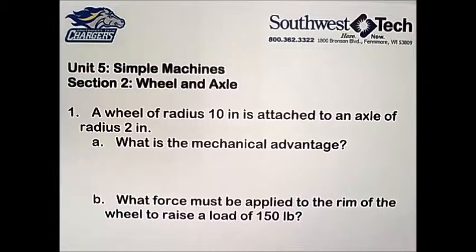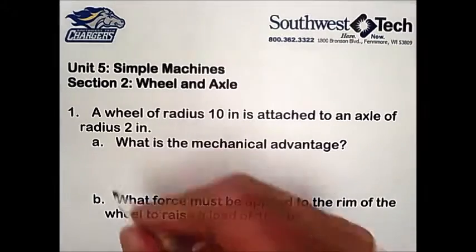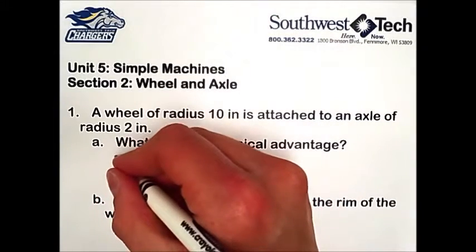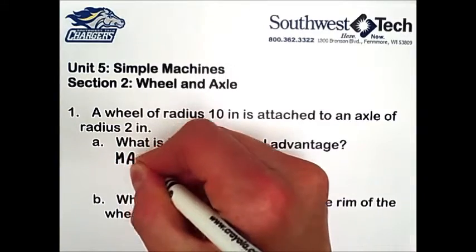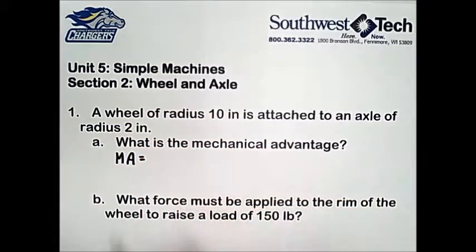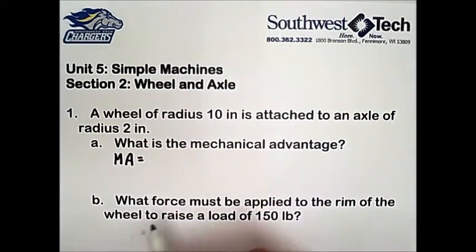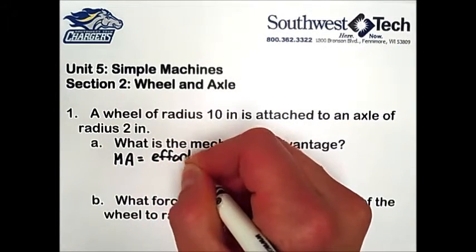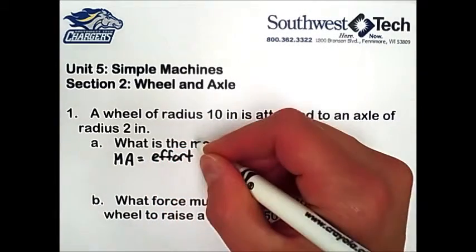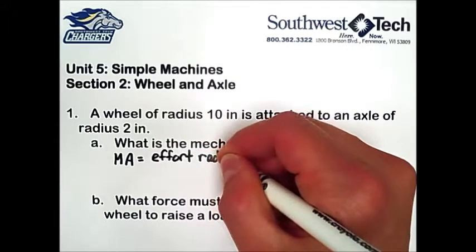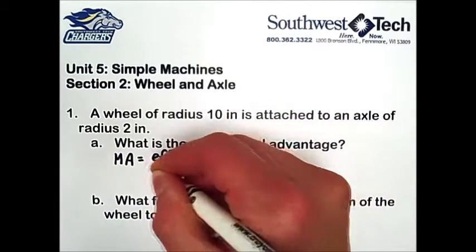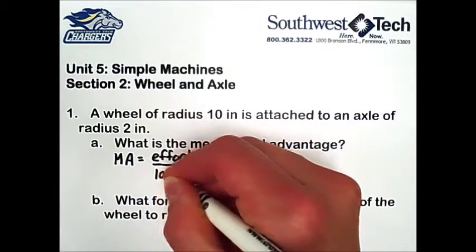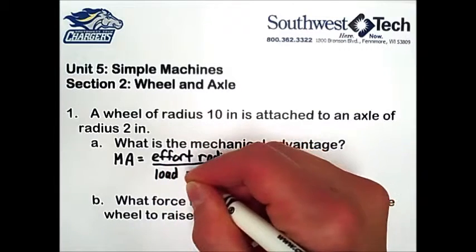A wheel of radius 10 inches is attached to an axle of radius 2 inches. What is the mechanical advantage? Finding the mechanical advantage of a wheel and axle is very similar to finding the mechanical advantage of a lever. Our mechanical advantage is equal to the effort radius — instead of the effort arm — divided by the load radius instead of the load arm.